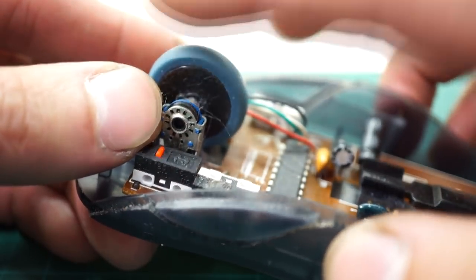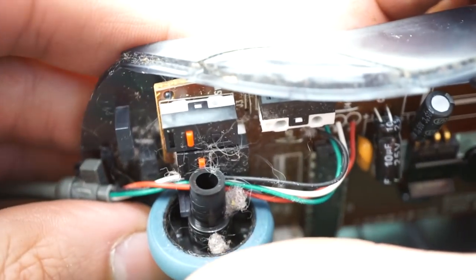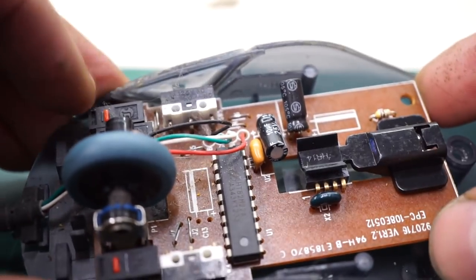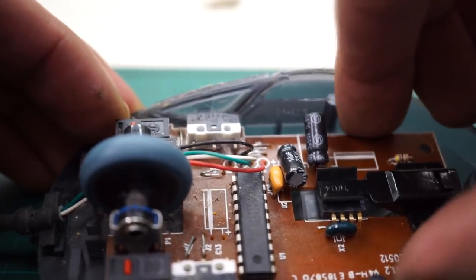So there's the encoder I will replace and the wheel button which doesn't work properly. But first, I removed the circuit out of the housing and disassembled it as much as I can.